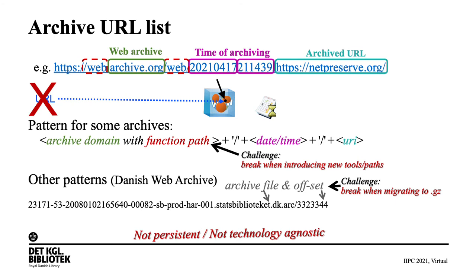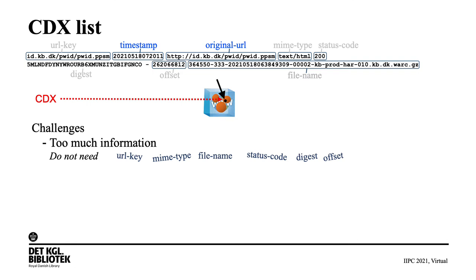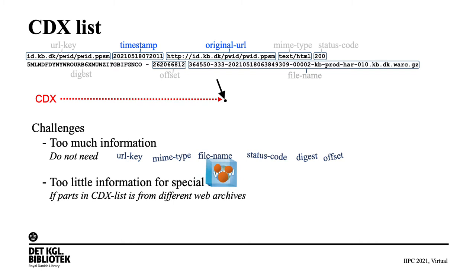For CDX lists, it is the same as for the program output — there is too much information. There is actually also too little information, because you cannot see which archive it is for. And again, it is not a stable standard. So a better alternative would be preferable.